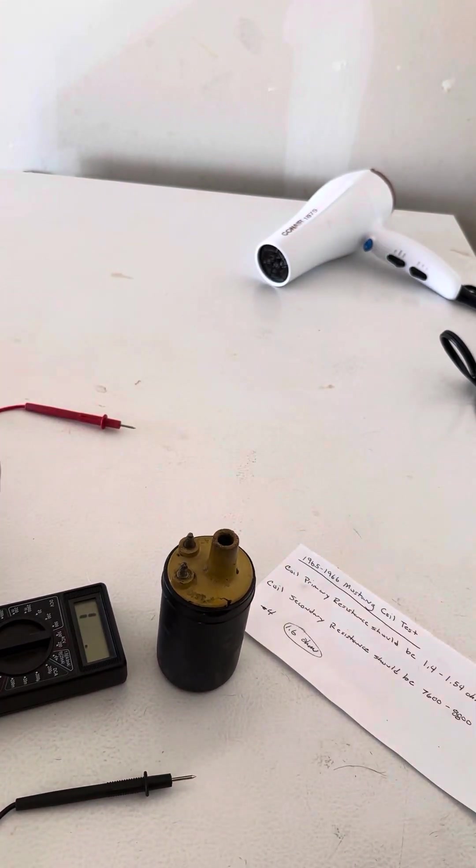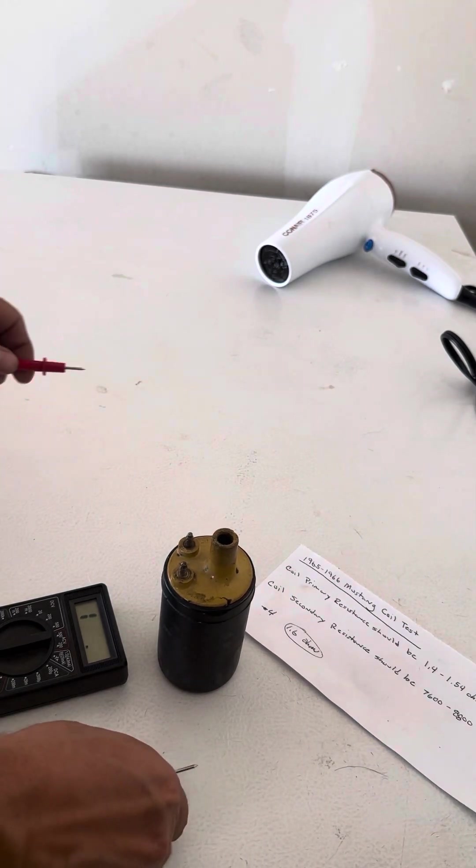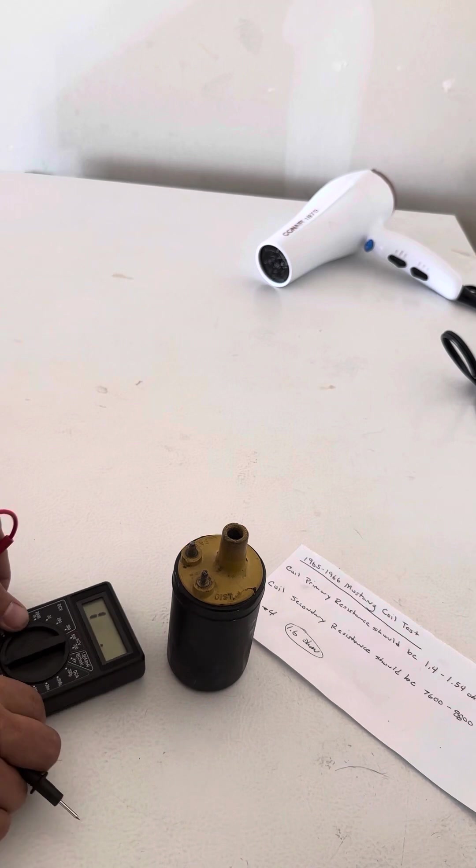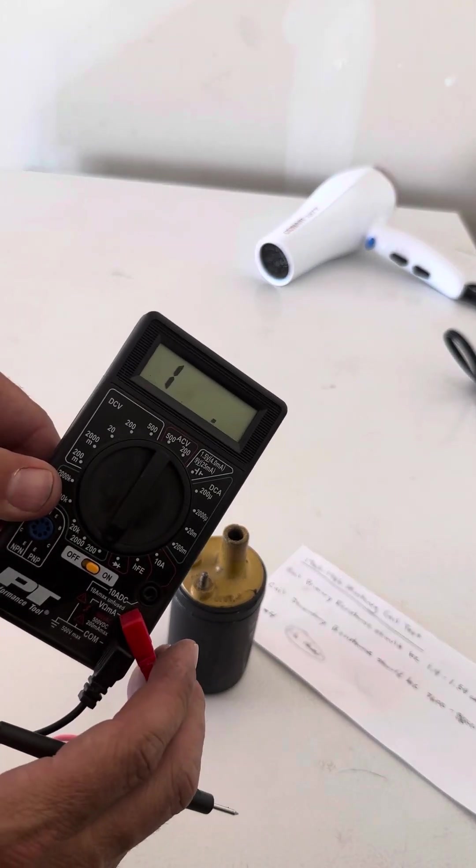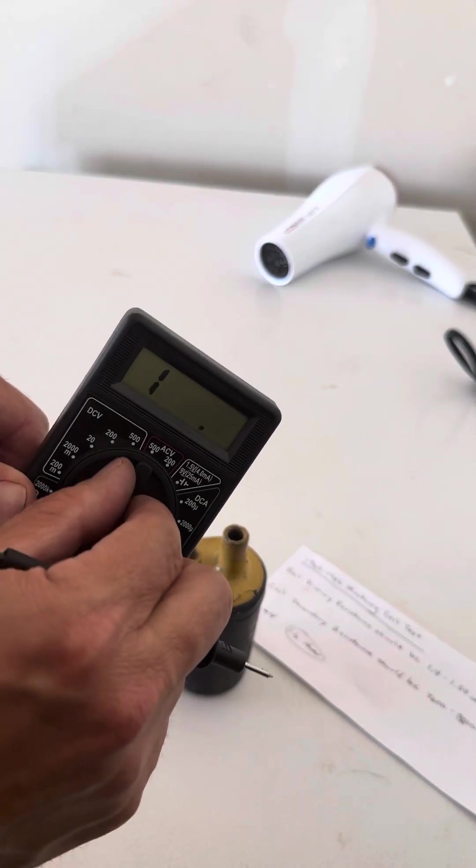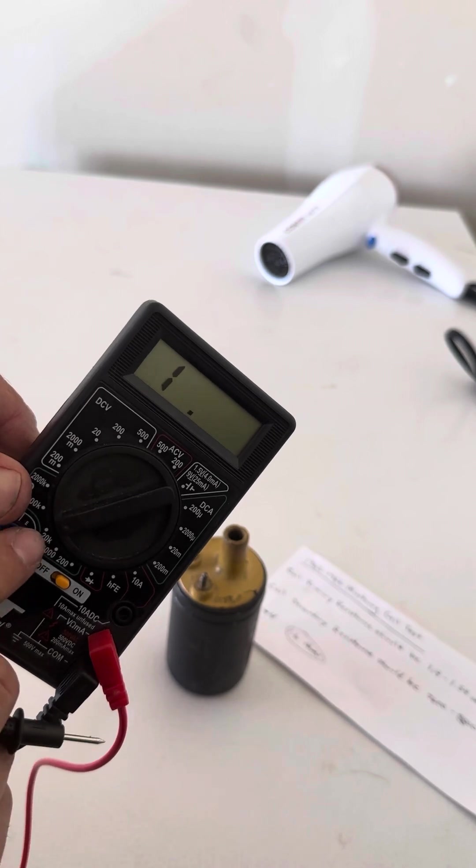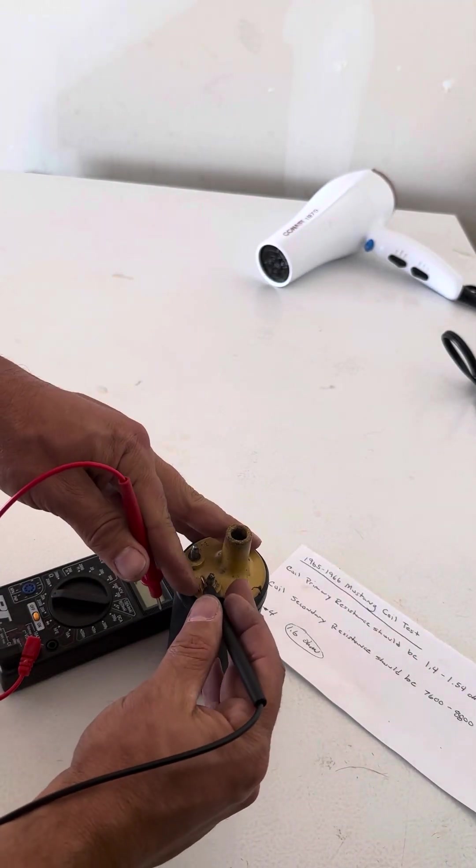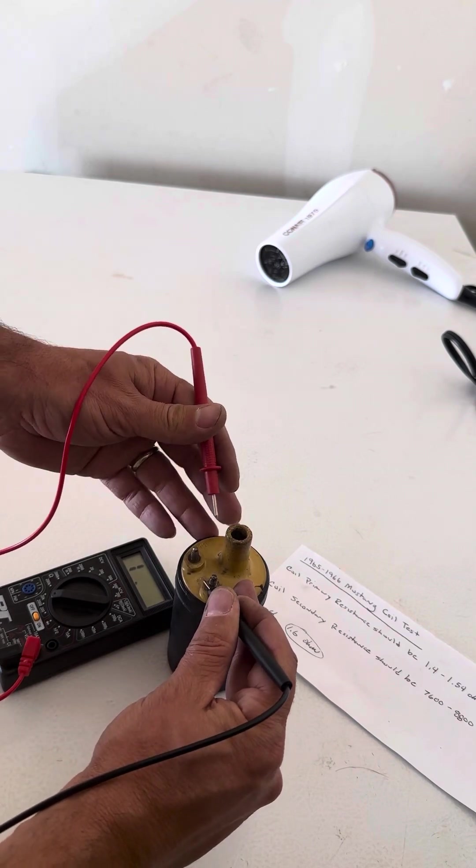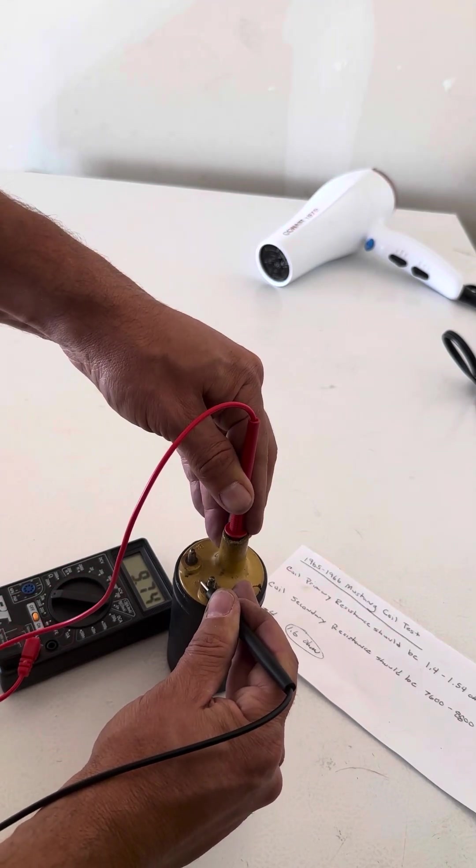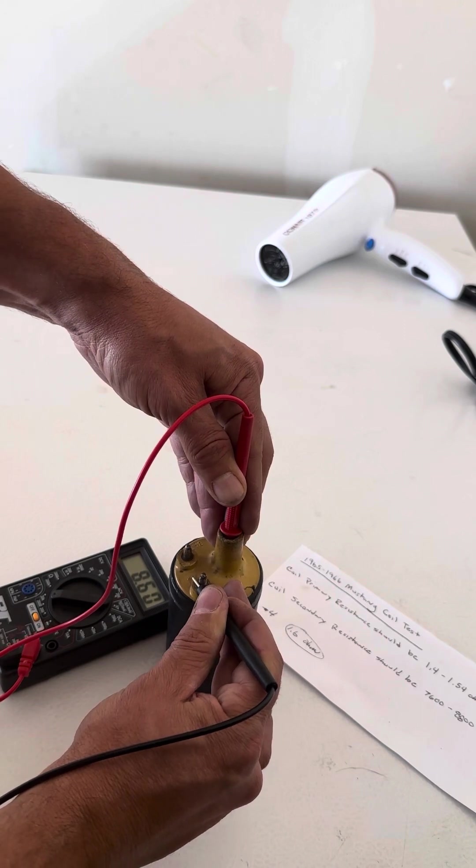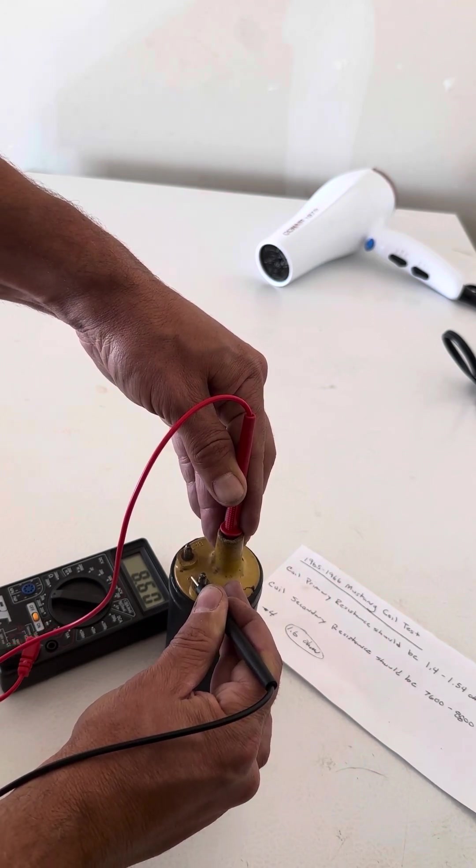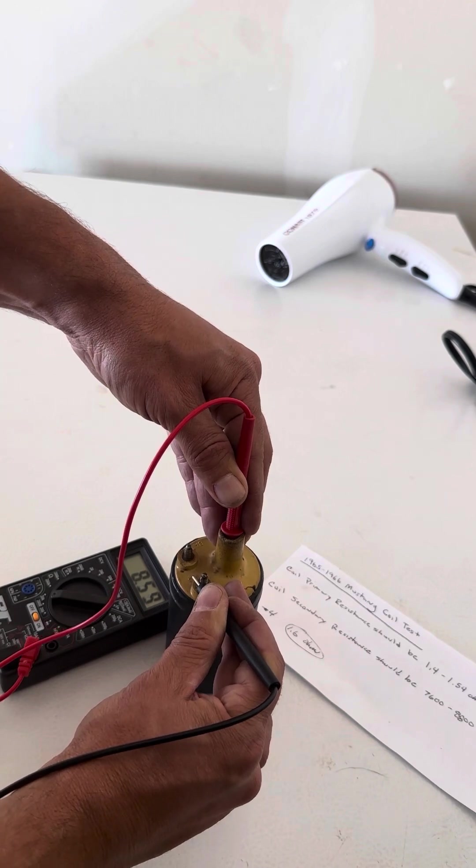For the secondary resistance test, what we're gonna do is change it from the 200 setting to 20k. We're gonna touch one of these terminals down into the top here. See my reading? 8.6 - that's 8600 ohms.